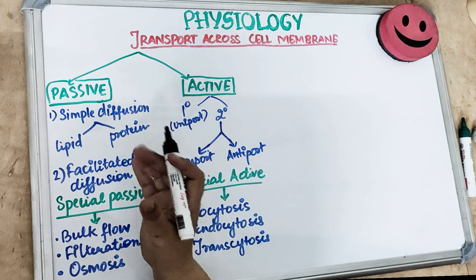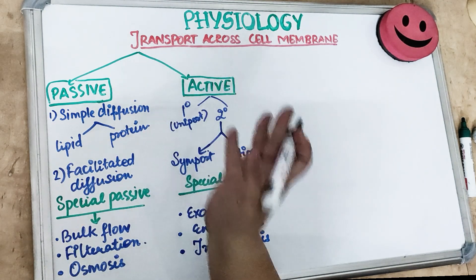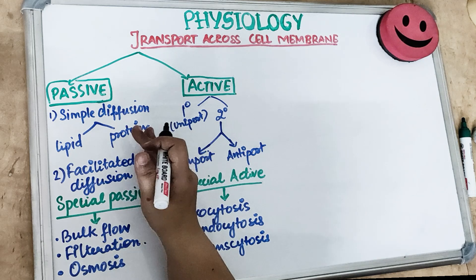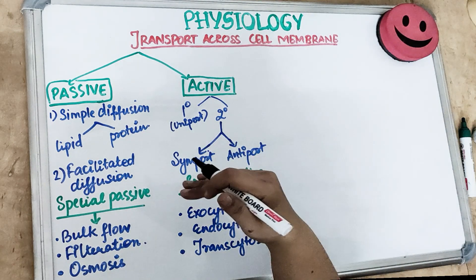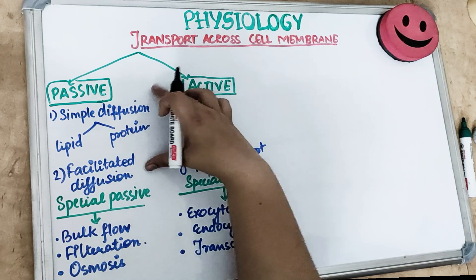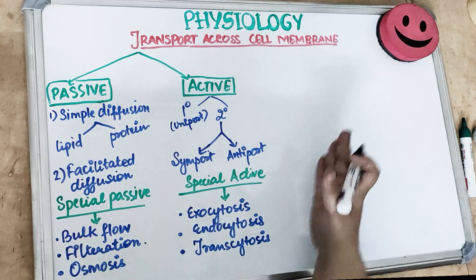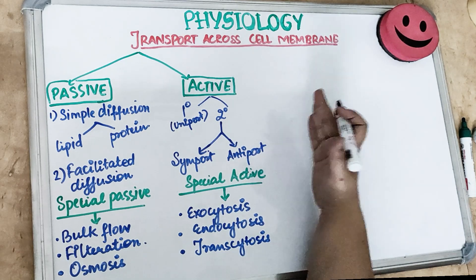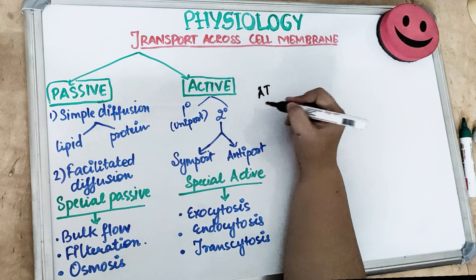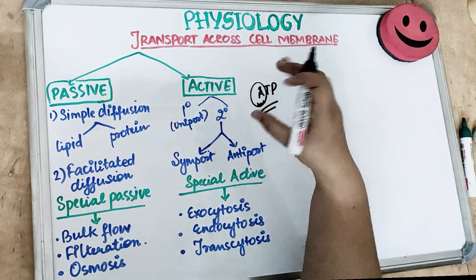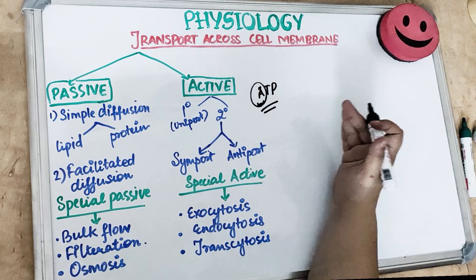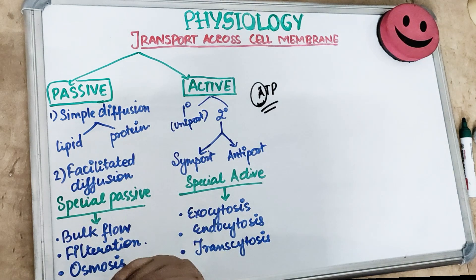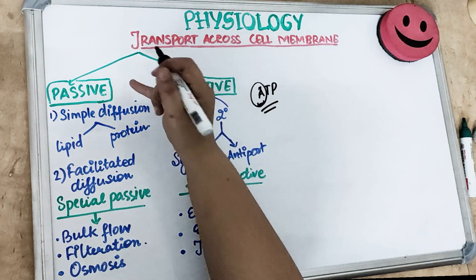Passive transport is transportation that occurs without resistance, without requiring any fuel. For example, a car coming downhill doesn't require fuel - that's a passive transport. Active transport requires ATP; A for active, A for ATP. Active transport works against the electrochemical gradient, which is why it requires energy. Passive transport is along the electrochemical gradient and doesn't require any energy.